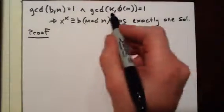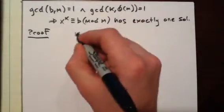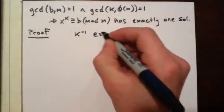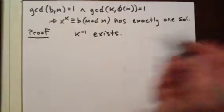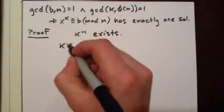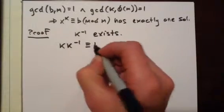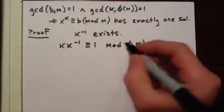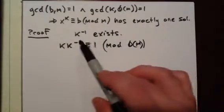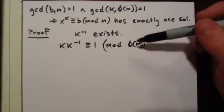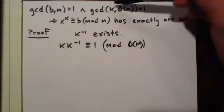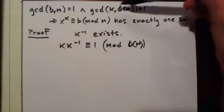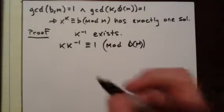Since gcd(k, φ(m)) = 1, k inverse exists. In other words, k·k^(-1) ≡ 1 (mod φ(m)). What I mean to say is k inverse exists mod φ(m) by the linear congruence theorem, which is satisfied because gcd(k, φ(m)) = 1.